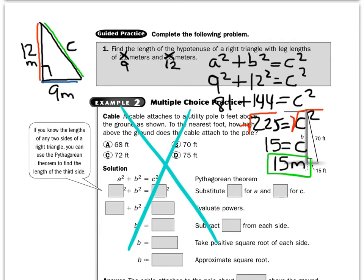So you get 225 equals C squared, and now take the square root on both sides because we have to figure out what C is. So the square root of 225 is just 15. Bring down the equals. The square root of C squared is just C. So the hypotenuse is 15 meters.